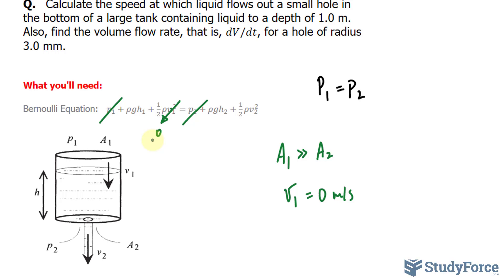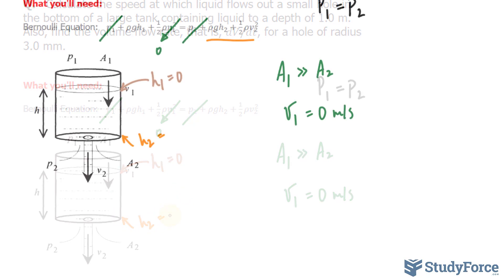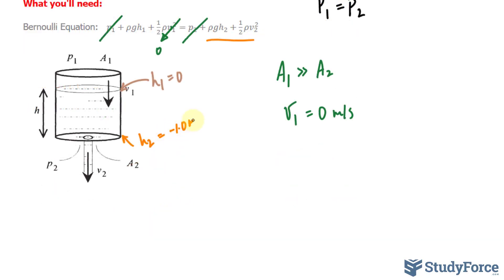All right. The next thing that we can say is that the height at this point, which is written as H sub 1, is equal to 0, and the height at the bottom here is equal to negative 1.0 meters. And that's given in the question since the depth of the tank is 1 meter.